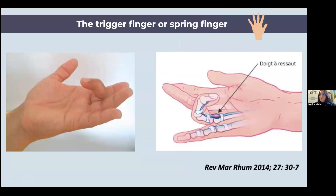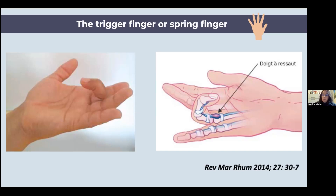The trigger finger — I think all of us have experienced it at some point — is a finger that gets blocked, and you need to manipulate it at the palm to open it. It is related to nodules within the flexor tendon. The nodule prevents the tendon from passing through the membrane, which explains the trigger finger. It is a very common condition both with and without diabetes.